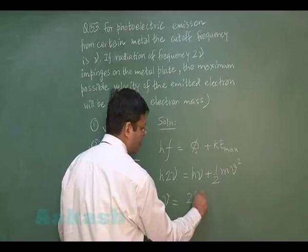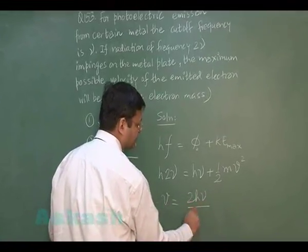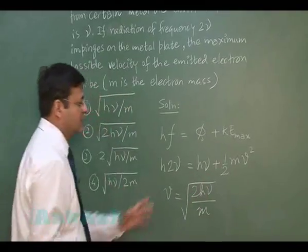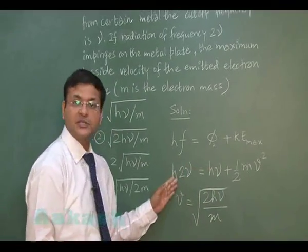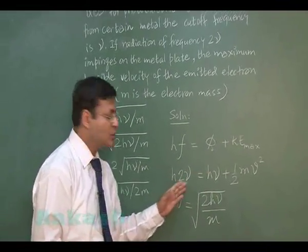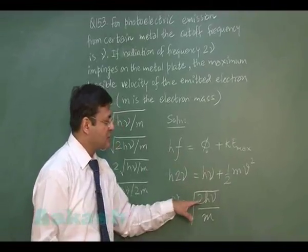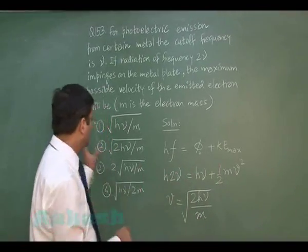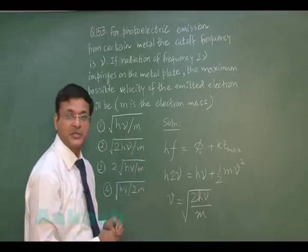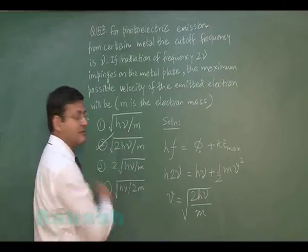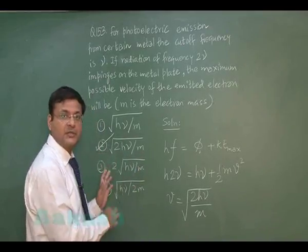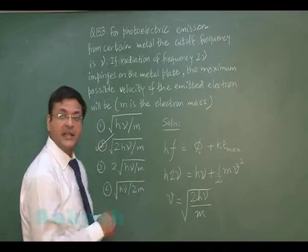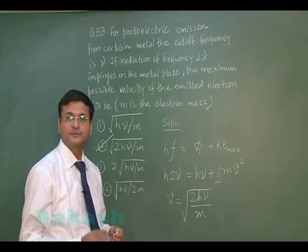Subtracting hν from h(2ν) gives hν = ½mv²max. Solving: v_max = √(2hν/m). The most appropriate option for this question is the second option, as shown.